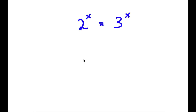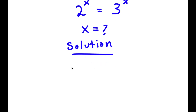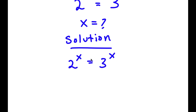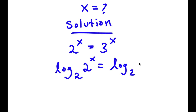In this problem, I have 2 to the power of x is equal to 3 to the power of x, and I want to find the value of x. I'm going to take the log of base 2 on both sides, so now I have log base 2 of 2 to the power of x is equal to log base 2 of 3 to the power of x.